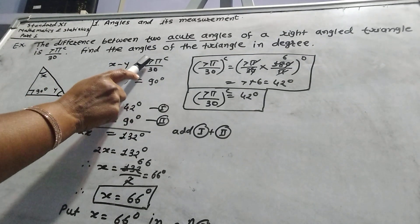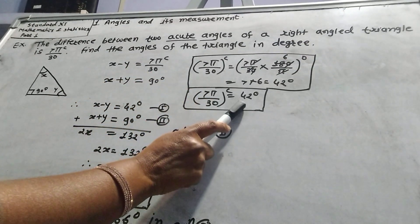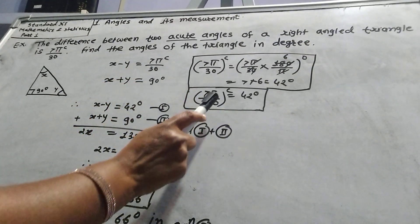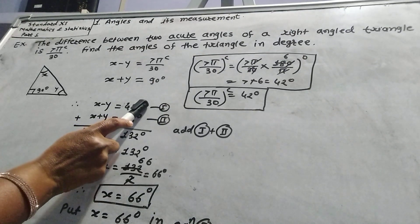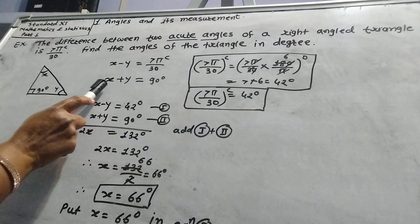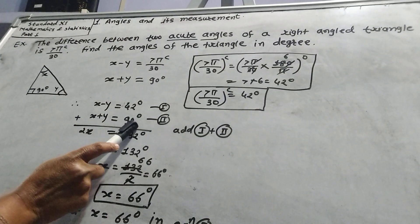First, convert 7π/30 radian into degrees. 7π/30 radian equals 42 degrees. Therefore, x minus y equals 42 degrees, and the second equation is x plus y equals 90 degrees.